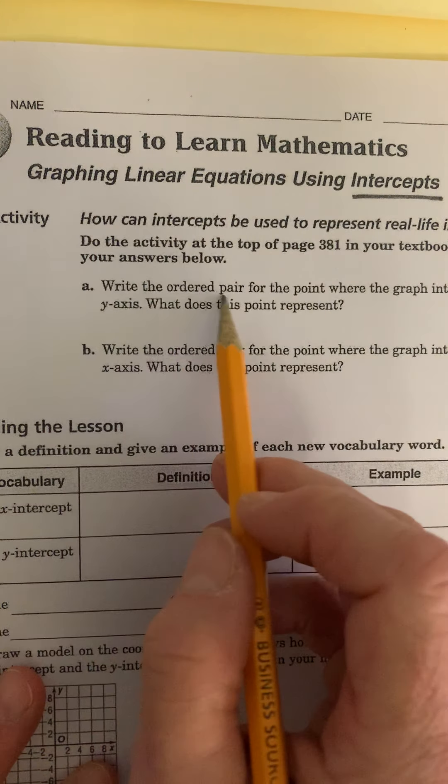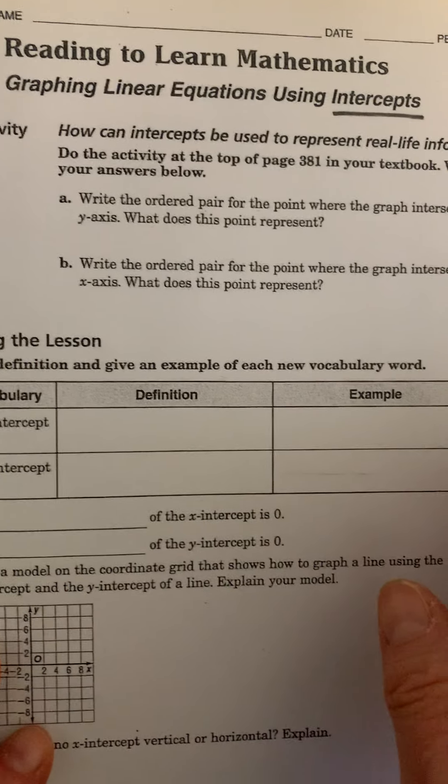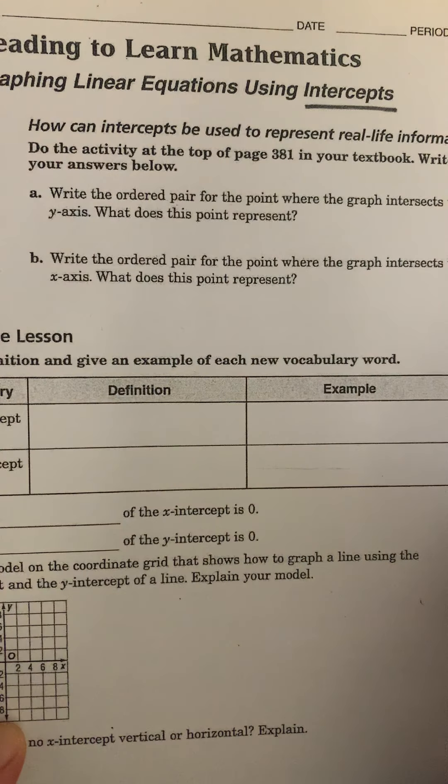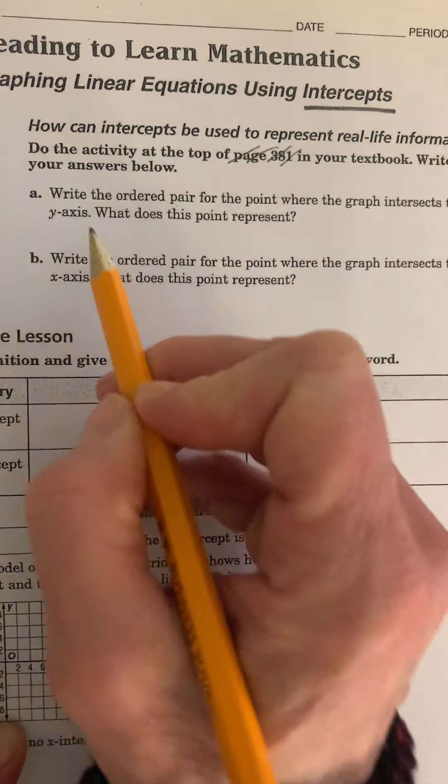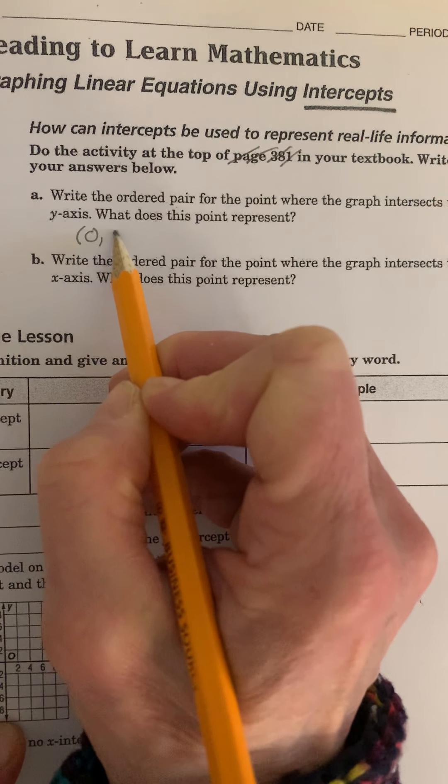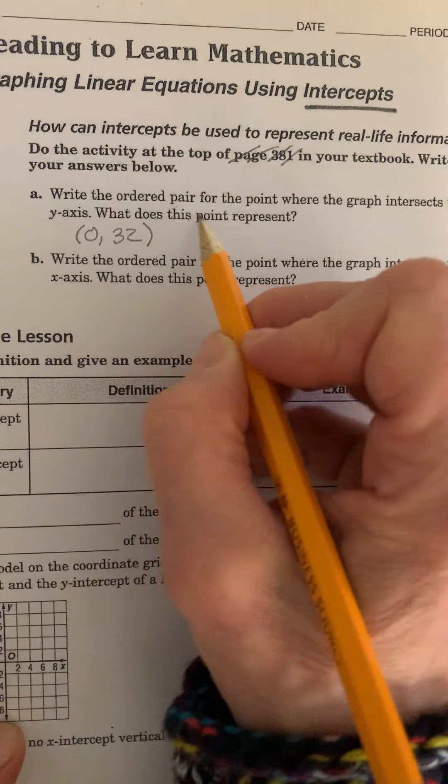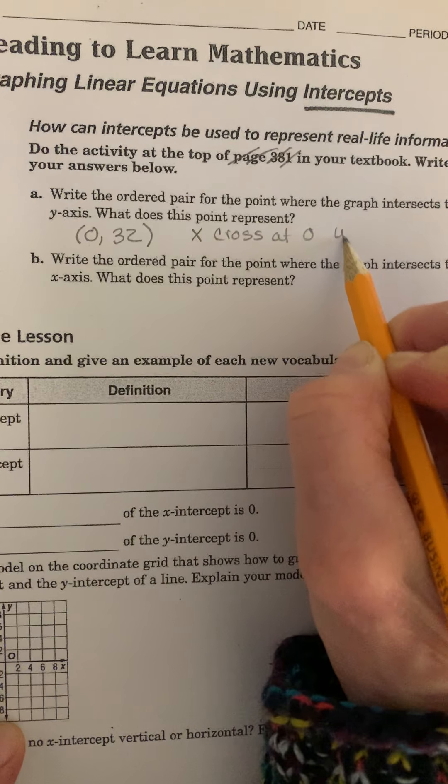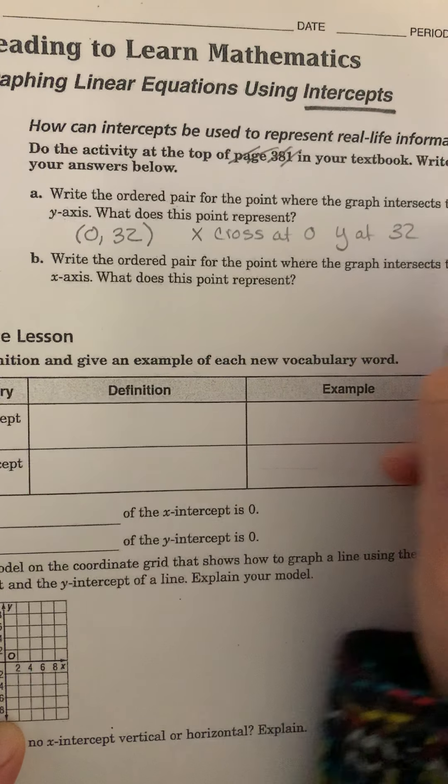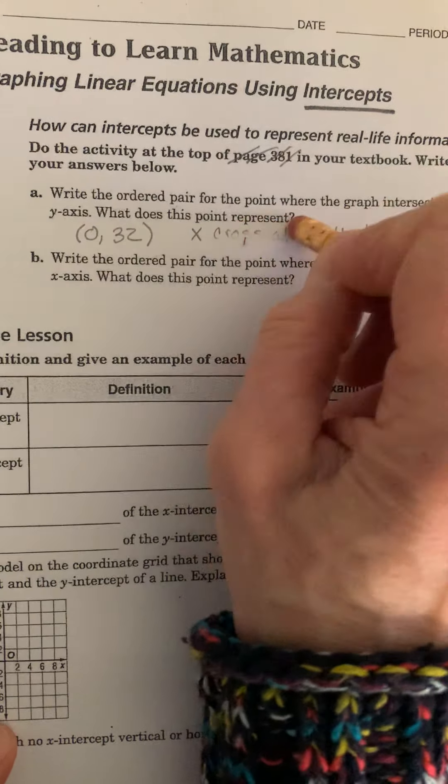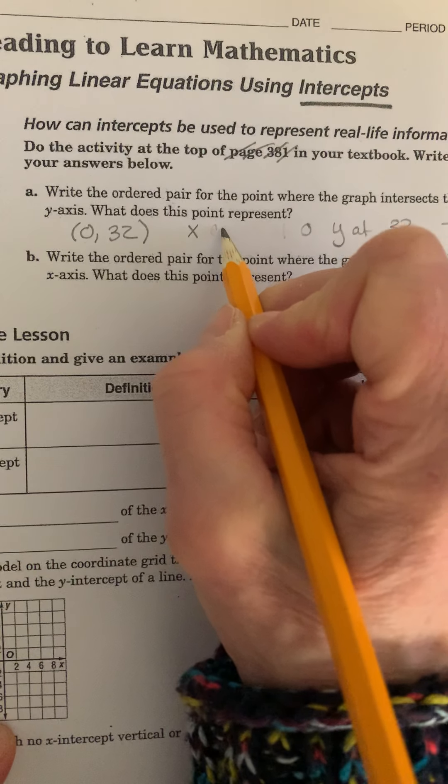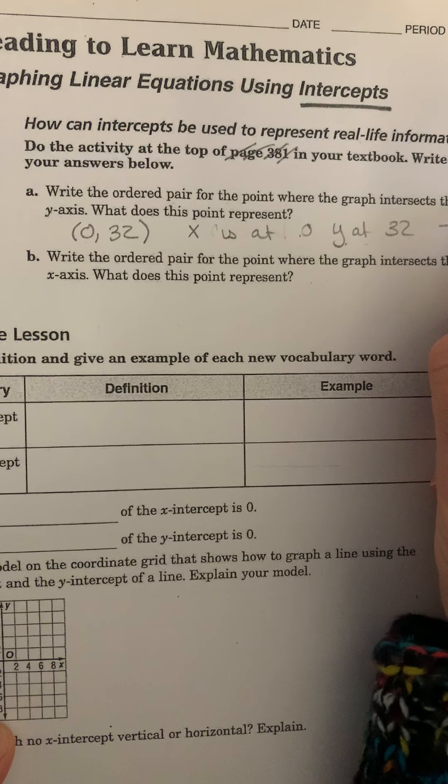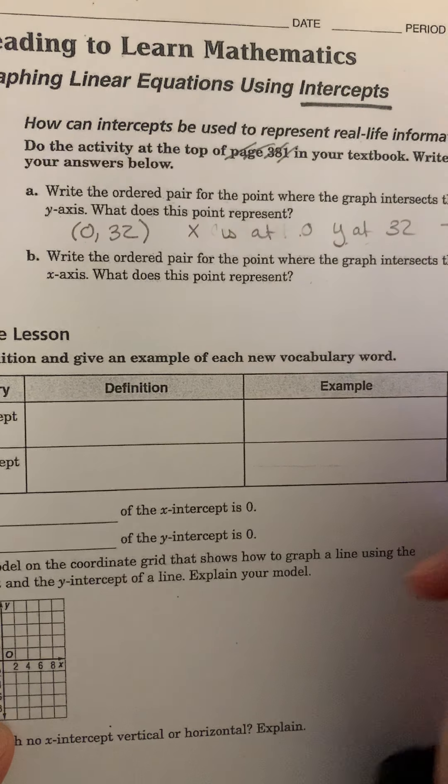First of all, it says here write an ordered pair for the point in which the graph intersects the y-axis, and what does the point represent? You can't go to page 381, so I'm just gonna make up a point for you. Let's say it's 0 comma 32, and what does it represent? It represents that the x will cross at 0 and the y at 32. So when I have the x at 0 and the y is at 32, going all the way up here, let's say that's 32. So this is where it's going to cross the y-axis right there.